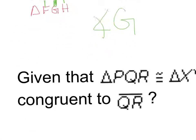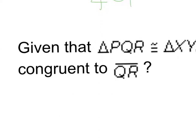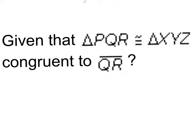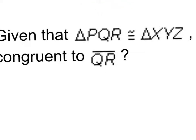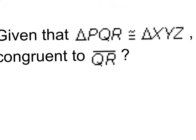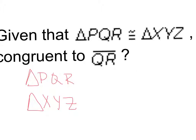Number three says: given that triangle PQR is congruent to triangle XYZ, what is congruent to QR? Writing them on top of each other — triangle PQR and triangle XYZ — QR were these two, so that means they're going to be congruent to YZ.